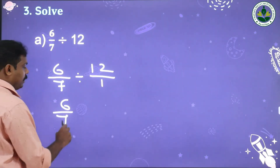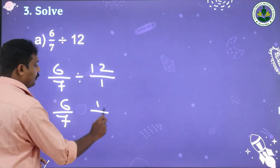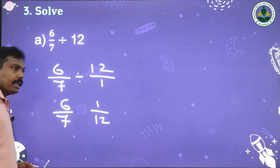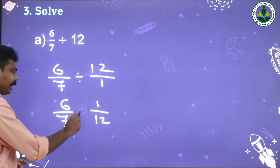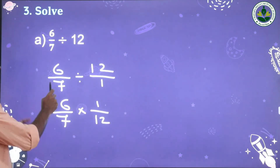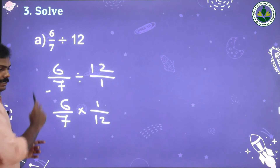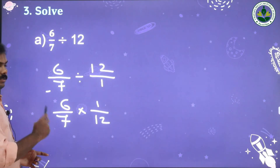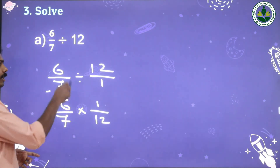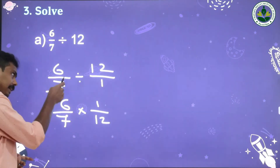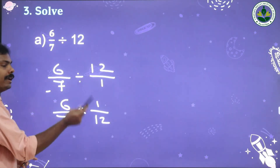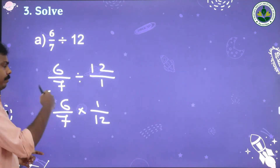We have 6/7 and the whole number 12 is written as 1/12. Then multiply: up to here it is division, but from the third step onwards it becomes multiplication. Take the reciprocal of the second number and multiply.